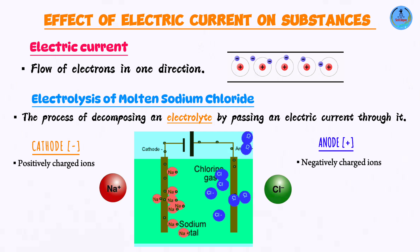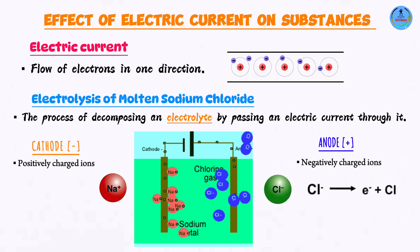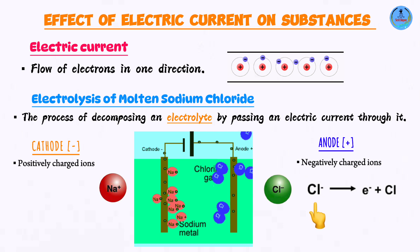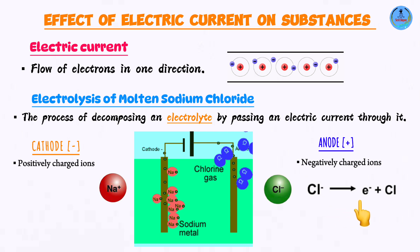On reaching the anode, the chloride ions are going to lose electrons to form chlorine atoms. Each chloride ion is going to lose one single electron to form a chlorine atom.